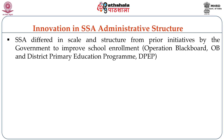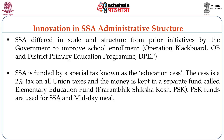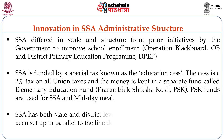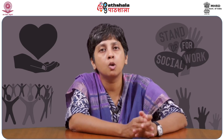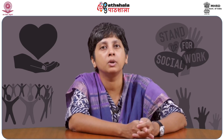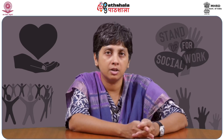SSA differed in scale and structure from prior government initiatives like Operation Blackboard and the District Primary Education Program. SSA is funded by a special tax known as the Education Cess — a 2% tax on all union taxes — with money kept in a separate fund called the Elementary Education Fund or Prarambhik Shiksha Kosh (PSK). PSK funds are used for SSA and Midday Meals. SSA has both state and district level implementation structures set up in parallel to line departments, enabling universal enrollment in primary education.